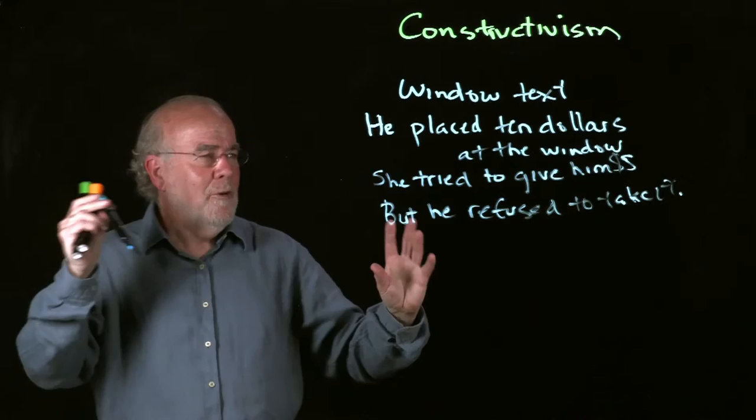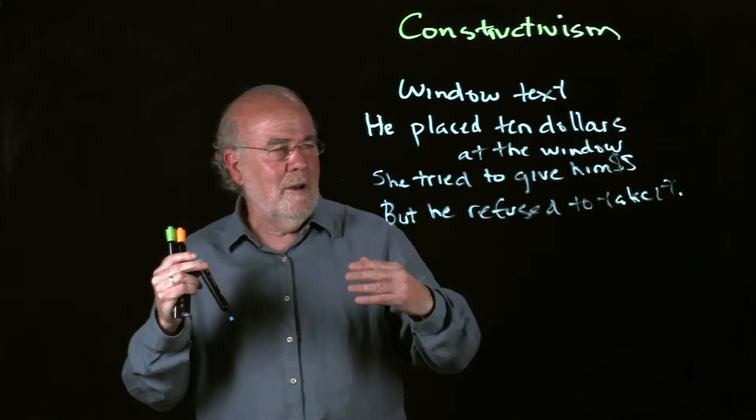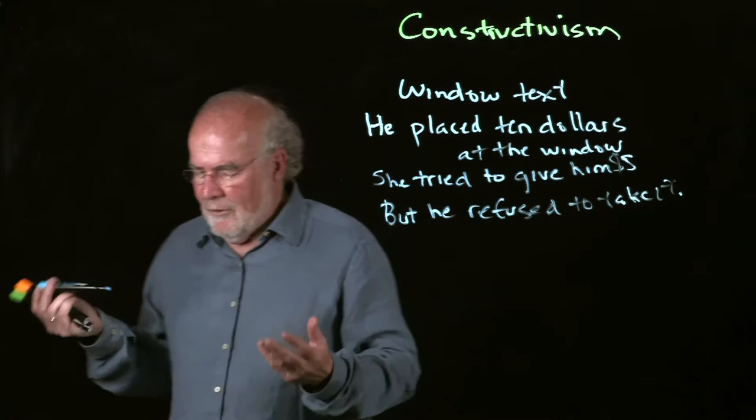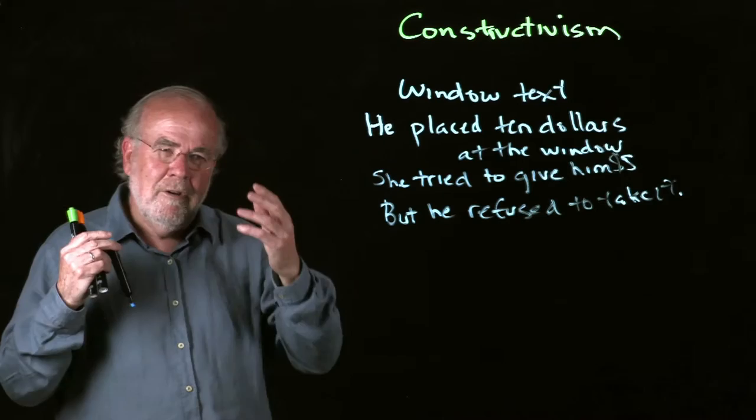The text doesn't really give you that indication. I might look around the text, glance ahead to see if I can figure it out. But you can sort of see what I'm dealing with here. What is going on? He put down ten dollars at the window. So is this person trying to give him change? But why is he refusing to take the change?